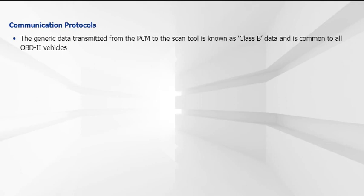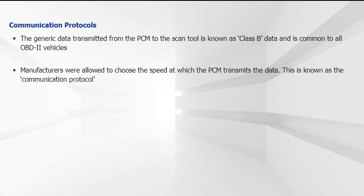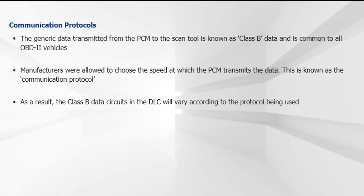The data transmitted from the PCM to the scan tool is known as class B data. While the data itself is common to all OBD2 vehicles, manufacturers were allowed to choose the speed at which the PCM transmits the data. This is known as the communication protocol. As a result, the class B data circuits in the DLC will vary according to the protocol being used.